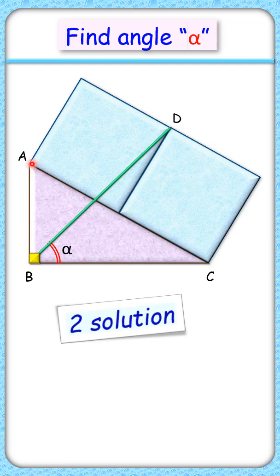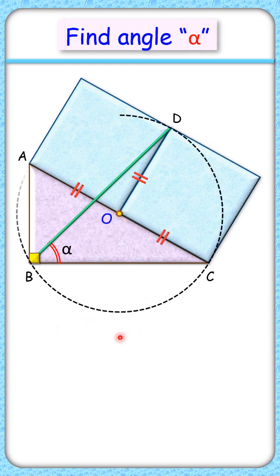For the first solution, we'll consider the sides of the squares which are equal in length. Thus from point O with OA as the radius we can draw a circle passing through these three points. As AC is the diameter and angle B is 90 degrees, it will pass through angle B also.